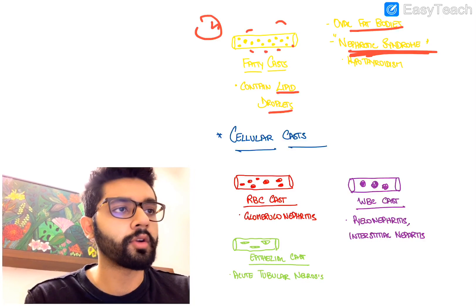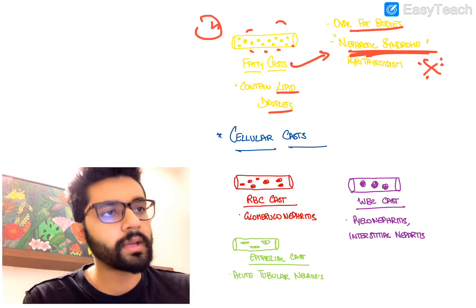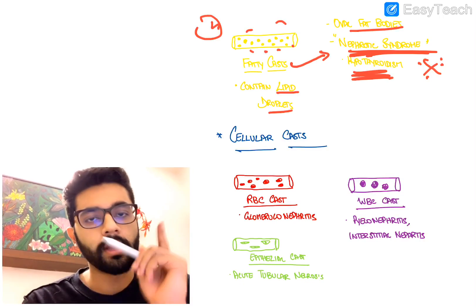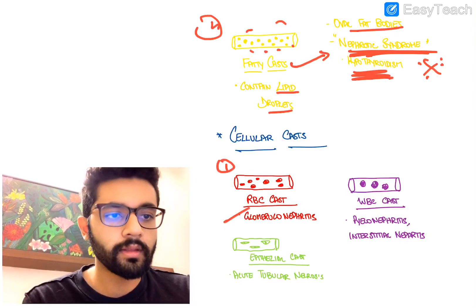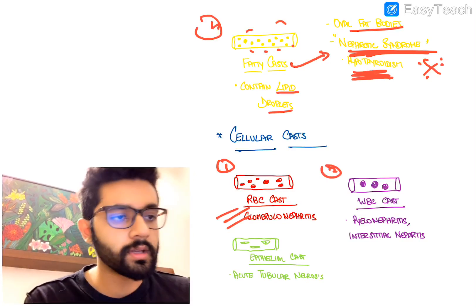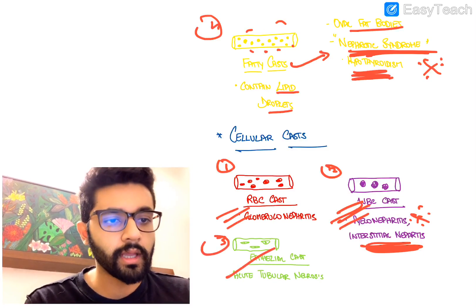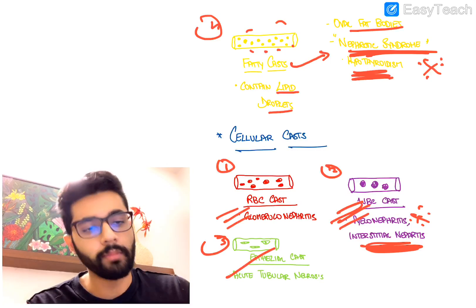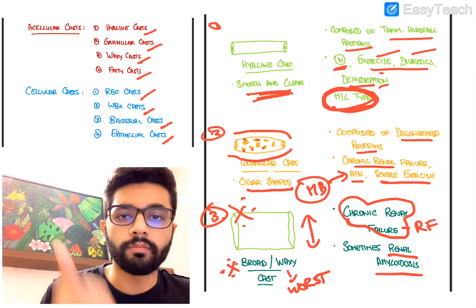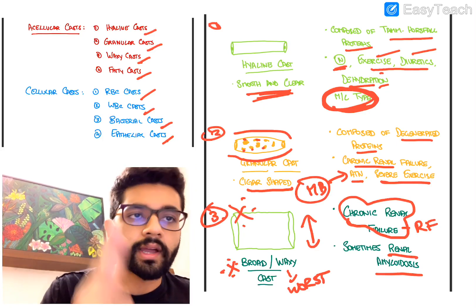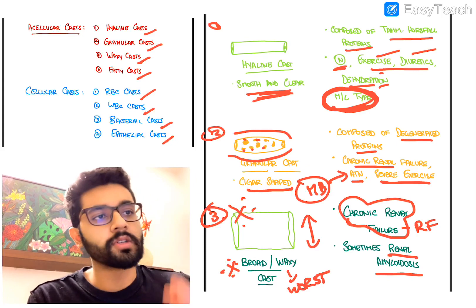Fatty casts contain lipid droplets, also called oval fat bodies, and their presence indicates nephrotic syndrome - typically seen in children. Rarely they can be associated with hypothyroidism, but the key association is nephrotic syndrome. Among cellular casts: RBC casts contain RBCs and are seen in glomerulonephritis; WBC casts contain WBCs and are seen in pyelonephritis and interstitial nephritis; epithelial casts contain tubular epithelium and are seen in acute tubular necrosis.